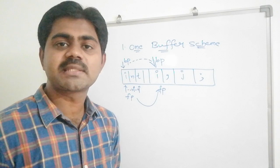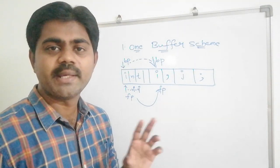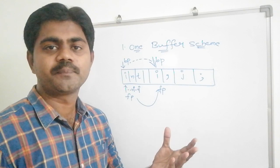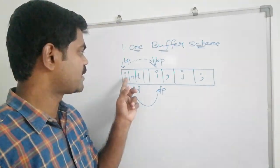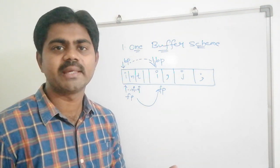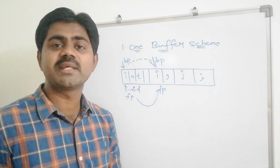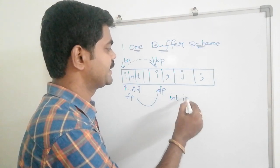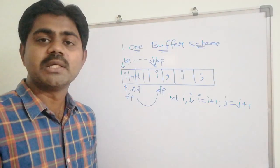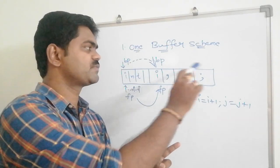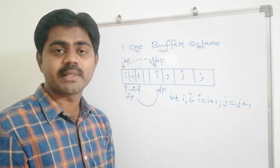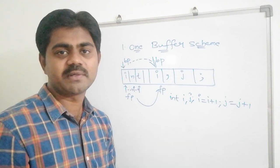What is the limitation of this one buffer scheme? We have only one buffer — that means only a single storage. I have only 8 blocks, so I can store only 8 characters. If my input string is very long — like int i, j, i equal to i plus 1, j equal to j plus 1 — I cannot store it in this one buffer scheme because I don't have enough space. So that is the major drawback of the one buffer scheme.